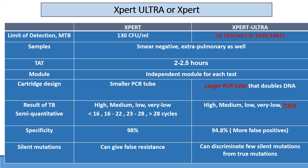The limit of detection for Expert is 130 CFU/ml and for Ultra it is 16 CFU/ml — so Ultra is approximately 10 times more sensitive. It is effective for smear-negative extrapulmonary samples and takes 2 to 2.5 hours. Expert Ultra uses a larger PCR tube that doubles the DNA input. Results for Expert are reported as high, medium, low, or very low; for Ultra, there is an additional 'trace' level. Specificity is 98% for Expert and 94.8% for Ultra. The slightly lower specificity of Ultra is because highly sensitive tests can detect some silent mutations alongside true mutations.